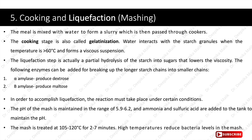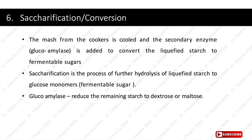High temperature reduces bacteria levels in the mash. To summarize: milled grain is mixed with water and heated above 60 degrees Celsius to form a thick suspension. Alpha and beta amylase are added to break down starch into small sugars like dextrose and maltose. This is only a partial breakdown. For complete breakdown, saccharification is done next, where glucoamylase is added to convert liquefied starch to fermentable glucose monomers, reducing remaining starch to dextrose or maltose.